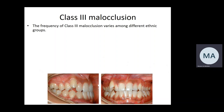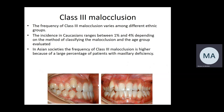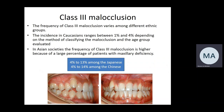The epidemiology for class three malocclusion: it's less frequent than class two or class one, and it differs according to ethnic group. In the Caucasian population it's much less than in the Asian population — about one to four percent, with three percent of Caucasians according to Laura Mitchell. In the Asian ethnic group it can reach up to 13% in the Japanese ethnic group or 14% in the Chinese ethnic group.